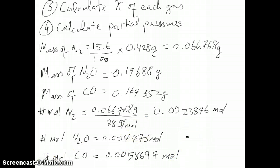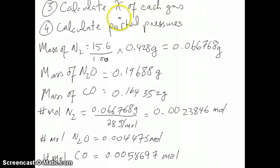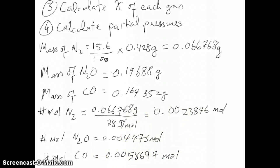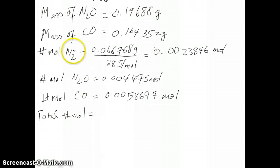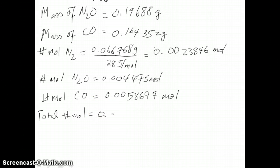Now that you have the number of moles of all of these gases, the next step is to calculate the mole fraction of each. Mole fraction is the moles of each gas over the total number of moles. So first we add all the moles together: moles of N2 plus moles of N2O plus moles of CO. If you add all of those together, you should get 0.01273 moles total.